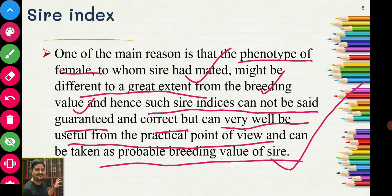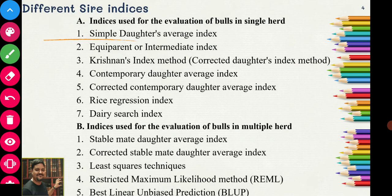Because of variation in the performance of dams, there may be chances of error in the sire index. We are concentrating mainly on the performance of the sire, though many indices also utilize the production of dam to minimize this error. Anyhow, this estimated breeding value gives a better idea of the probable breeding value.